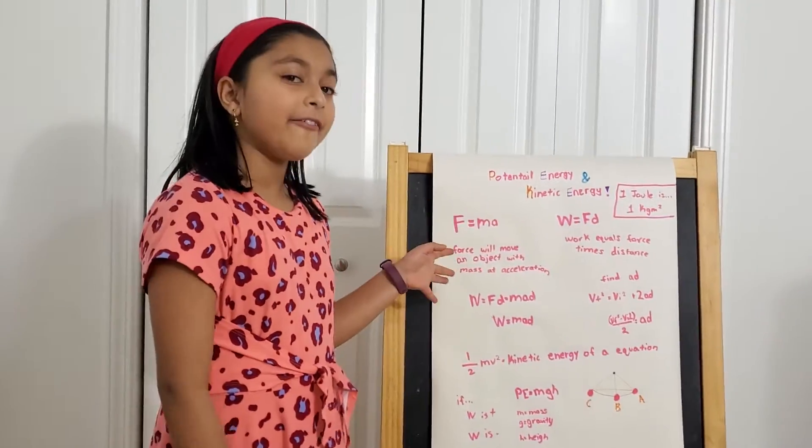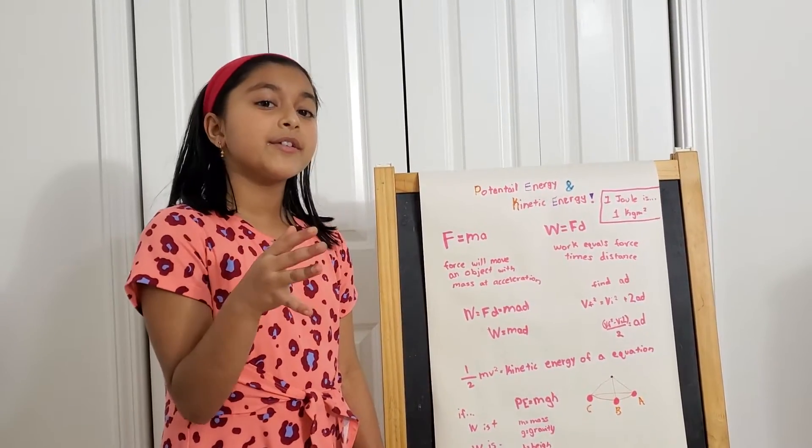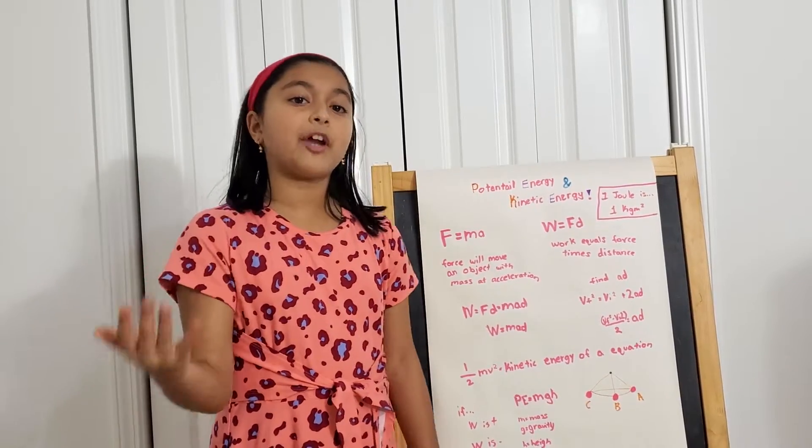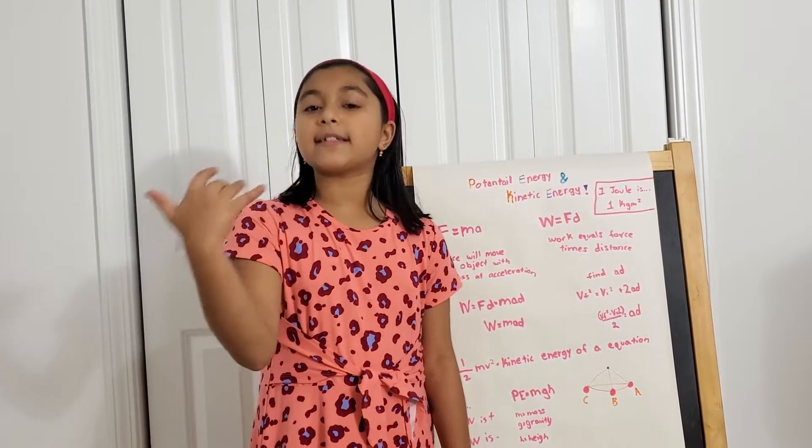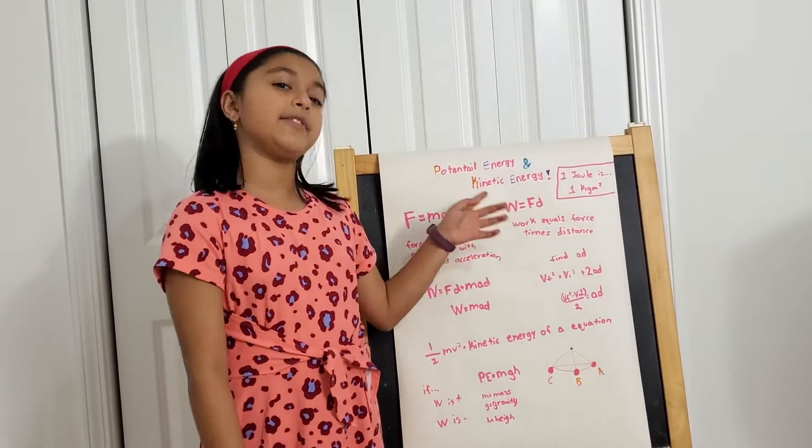Our first one is F equals MA, as you can see here. Net force will move an object with mass with acceleration. Continuing on with that, we can go to W equals FD. Work equals force times distance.